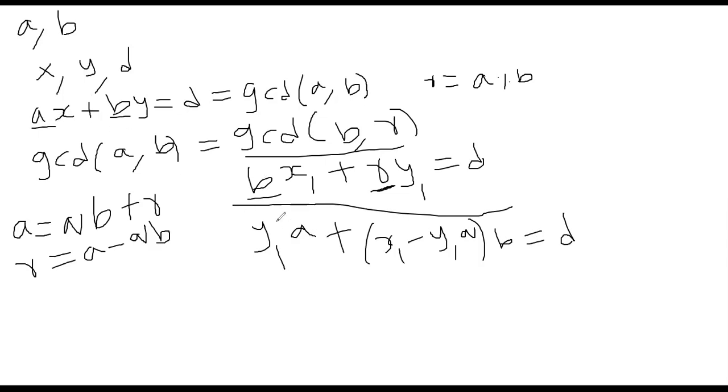We will get something like Y1 times A plus X1 minus Y1 times Q, times B is equal to D. So we got what we wanted, right? We need something adjacent to A. Yes, we have for A, it's Y1. Something adjacent to B, yes, this part is for B. So the solution is simple. Now the solution is X is equal to Y1, and Y is equal to X1 minus Y1 times Q.